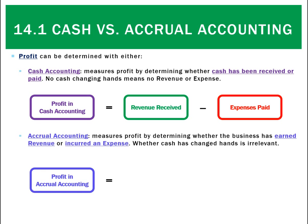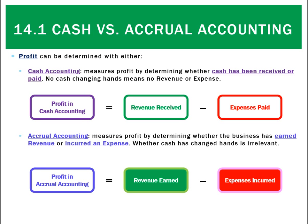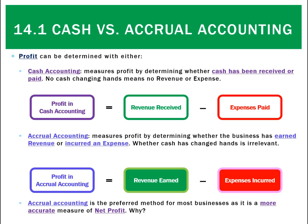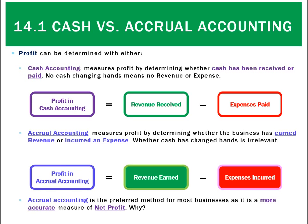What we want to do is use what's called accrual accounting, which is a little more thorough because it looks at revenue earned unless expenses incurred. You can see it's different to profit in cash accounting — the main difference is it really doesn't matter whether cash has been received or paid; it's all about whether the revenue has been earned or the expenses incurred. This is a more accurate measure of net profit and we're going to try and use accrual accounting wherever we can.